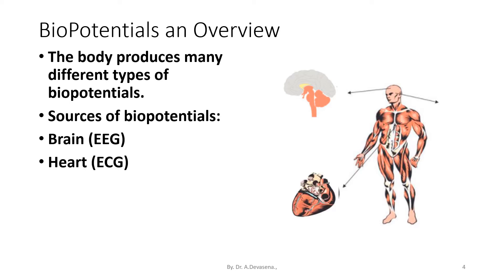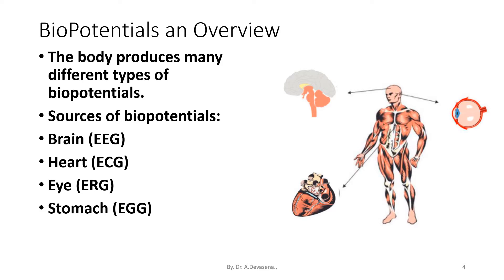The heart produces ECG, electrocardiogram. The eye produces ERG, that is electroretinogram. The stomach produces EGG, that is electrogastrogram. Then muscle produces EMG, electromyogram.